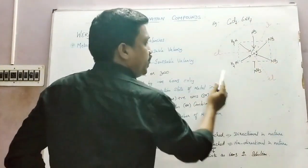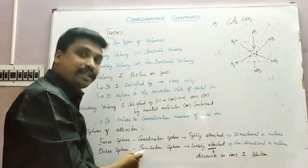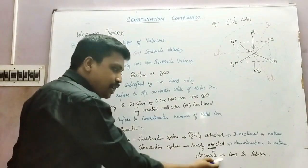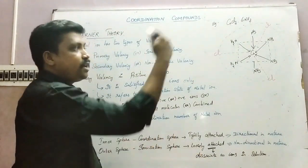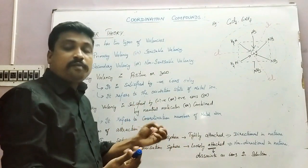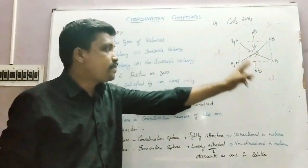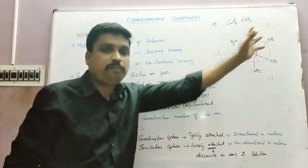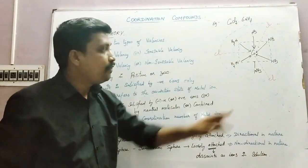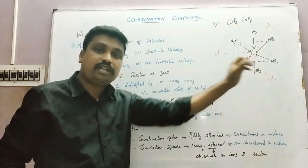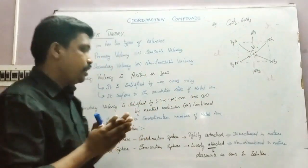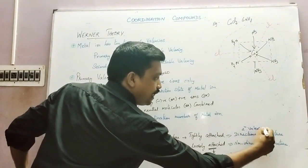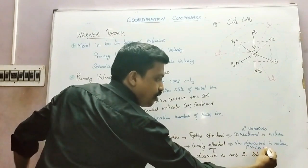The outer sphere, where the chloride ions are present, is called the ionization sphere, because those particles can dissociate when dissolved in water. They are loosely attached and can be attracted from any direction. Cobalt has a 3+ charge, satisfied by three chloride ions — that is why the bonds to chlorides are shown as dotted lines, whereas the cobalt-ammonia bonds are straight lines. So secondary valencies are directional in nature and primary valencies are non-directional in nature.